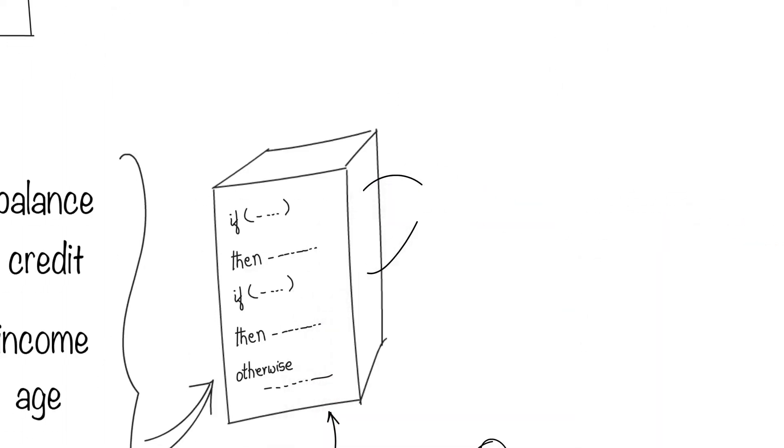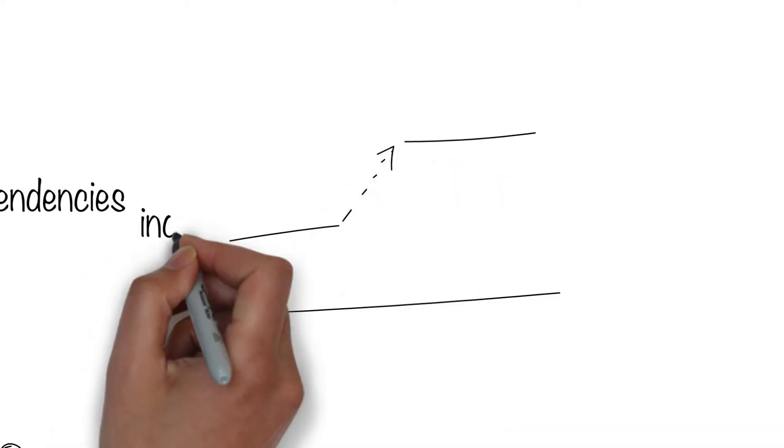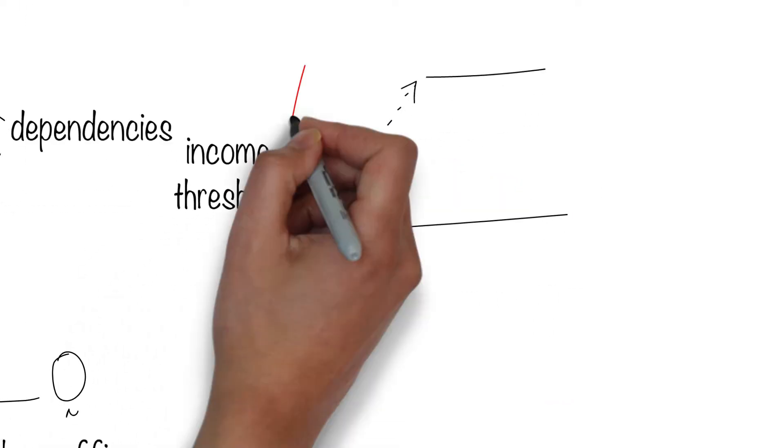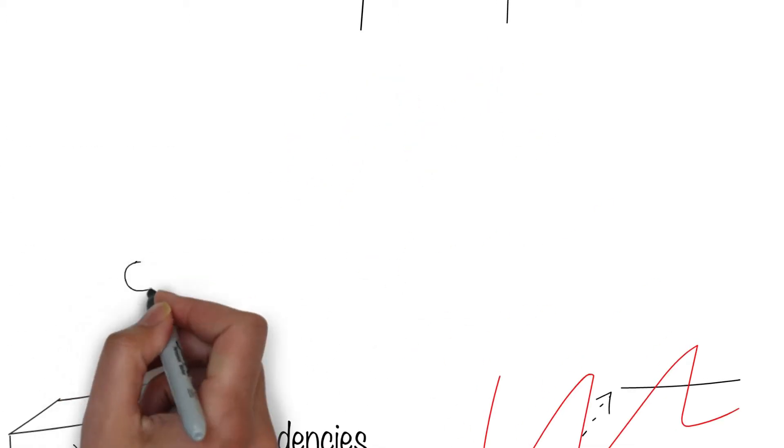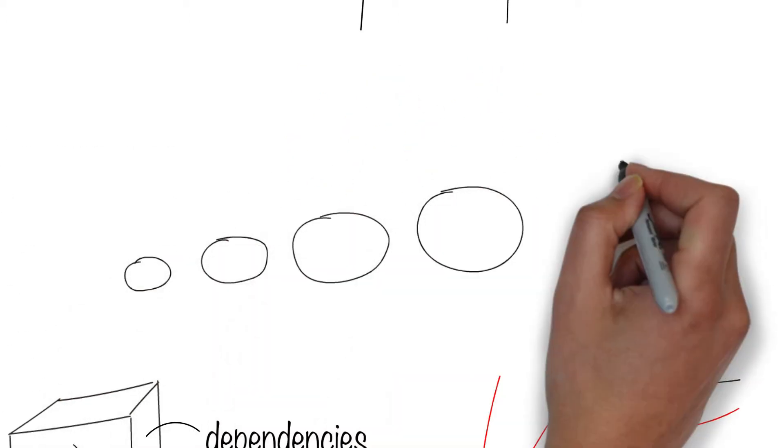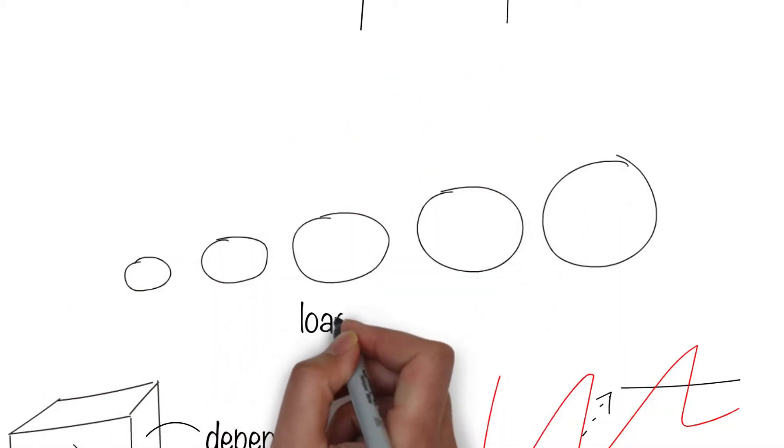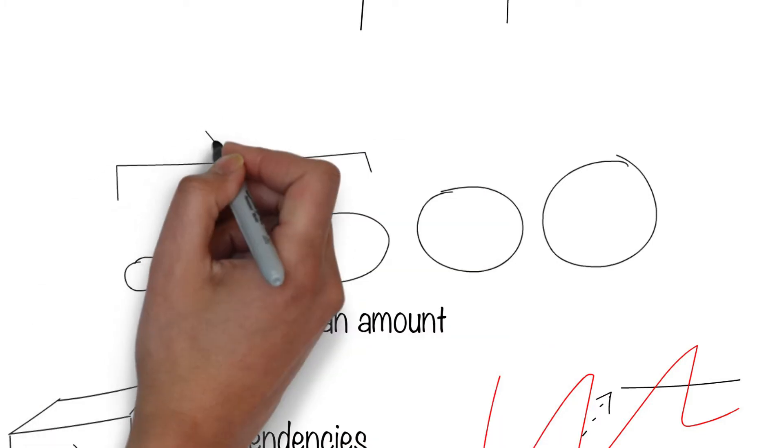Then the dependency among rules matter. Maybe the bank has to increase the income limit, but then if the customer has enough assets, perhaps the income doesn't matter. Perhaps the default rate depends on the loan amount and these rules apply only to smaller amounts.